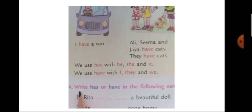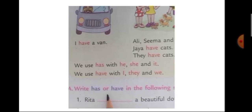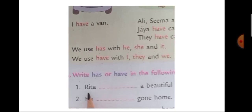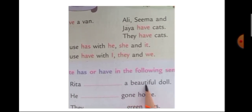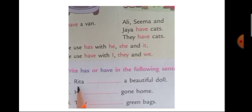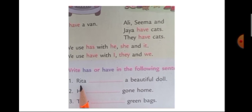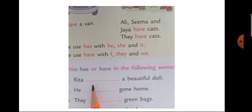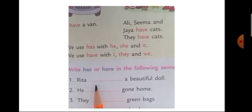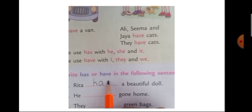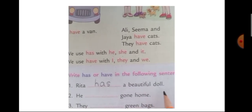Now let's read the question: Write 'Has' or 'Have' in the following sentences. First sentence: Rita ___ a beautiful doll. Now Rita is a girl, so we have to use the word 'She' for Rita. So for 'She', what will you use — Has or Have? She Has. Yes, so let's write H-A-S. She has a beautiful doll.